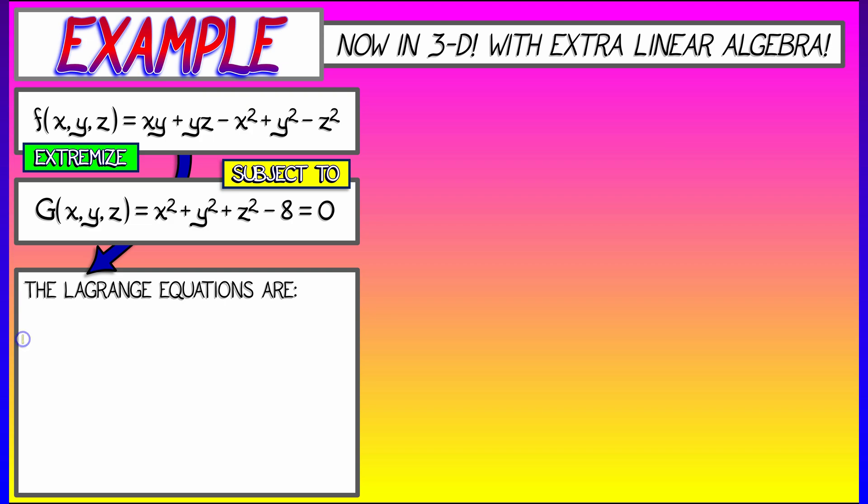Three variables: x, y, and z. First variable, x. Take the partials with respect to x. The partial of f with respect to x is going to give me y - 2x. The partial of g with respect to x is going to give me 2x multiplied by lambda. We're going to get similar sorts of equations when we take the derivatives with respect to y, with respect to z.